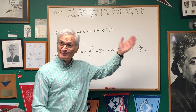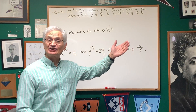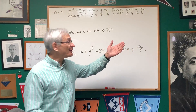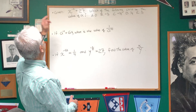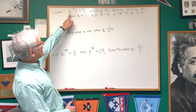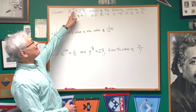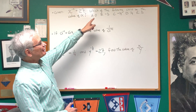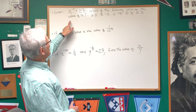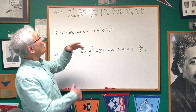Today we have three problems in algebraic exponents. Let's start with the first one. Given x to the minus three power is 27, which of the following could be the value of x?